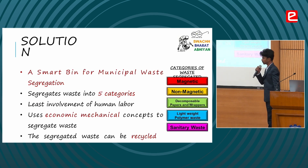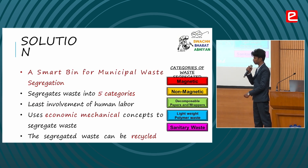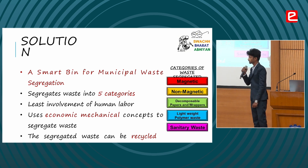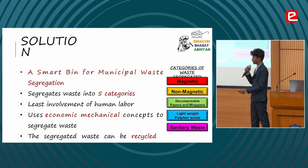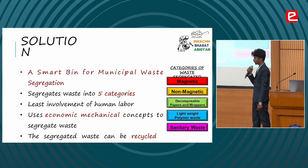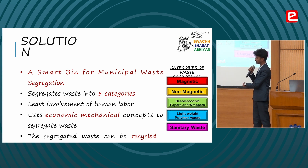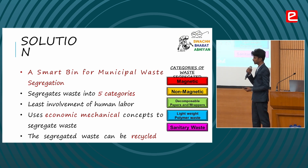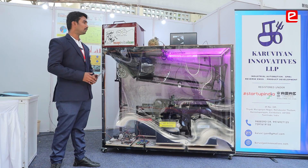We have proposed a system called a Smart Bin for municipal waste segregation. We are categorizing waste into five main categories: metallic, non-metallic, waste paper, polymers, and sanitary waste, which includes napkins and diapers. By segregating these five types, we can recycle the polymers and other materials to generate value from the waste.